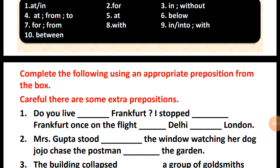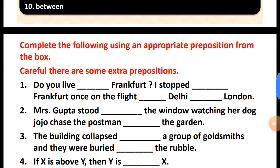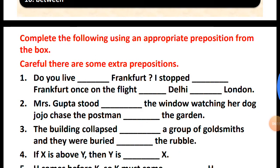Mrs. Gupta stood — dash — the window, watching her dog Jojo chase the postman — dash — dash — the garden. The building collapsed — dash — a group of goldsmiths and they were buried — dash — dash — the rubble.